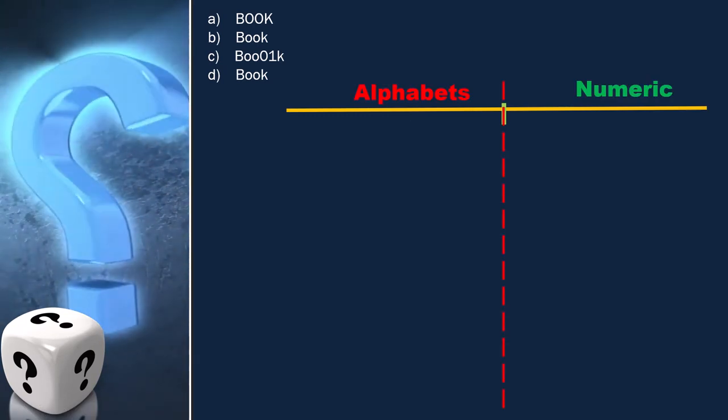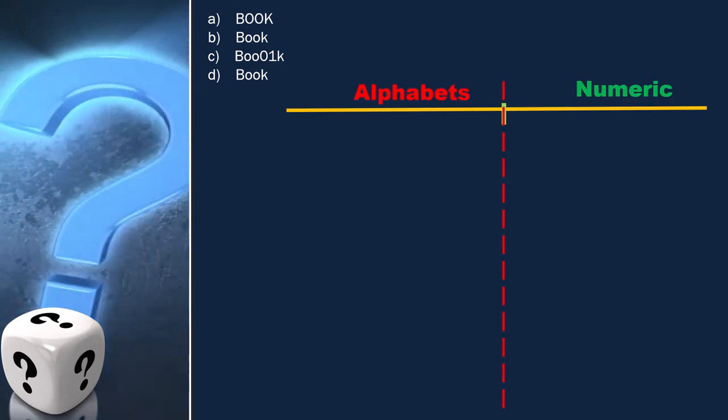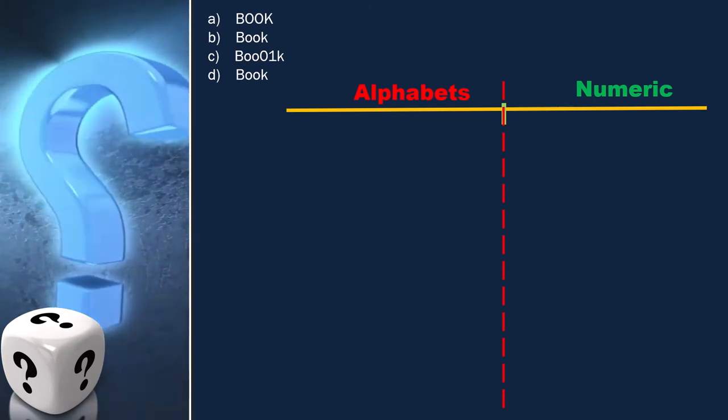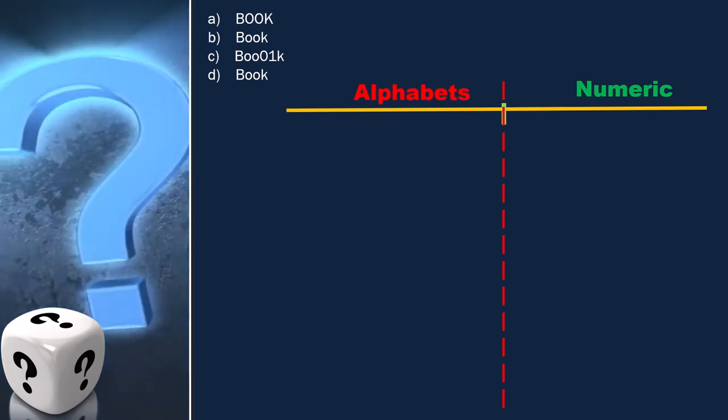Let's first draw the equivalence class diagram. As per the question, we can draw only two classes, one for alphabets and the other one for numeric.